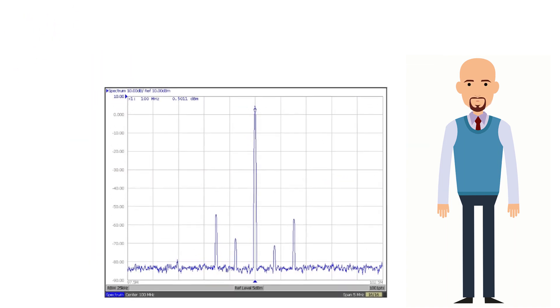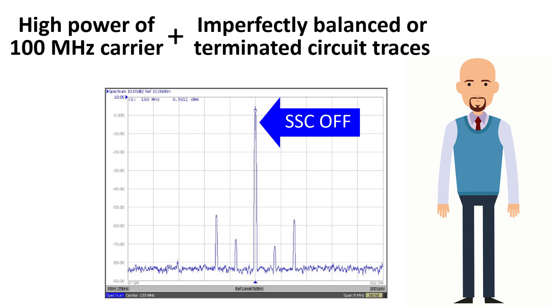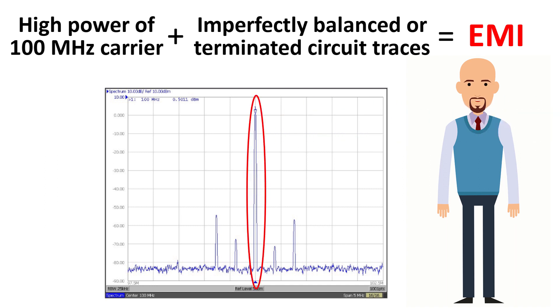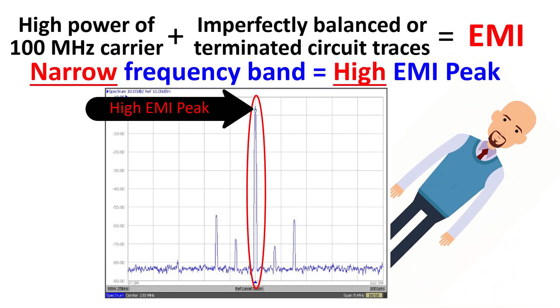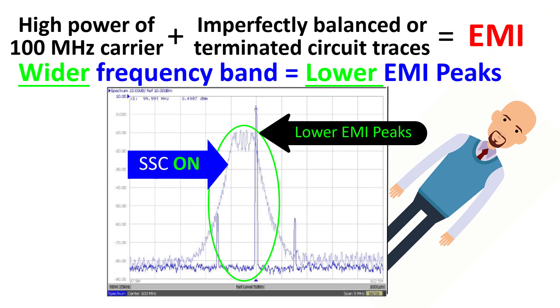The high power of the carrier signal can result in radiated emissions and cause EMI if the circuit traces carrying the signals are not perfectly balanced and terminated. By modulating a clock with spread spectrum, high power in a single narrow frequency band is replaced with lower power spread over a wider band. This reduces the EMI associated with the signal.